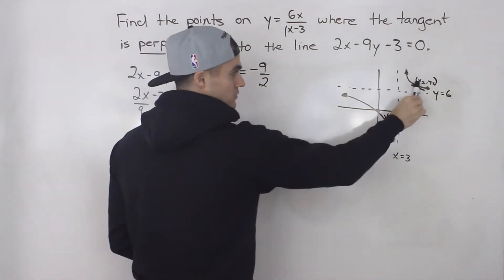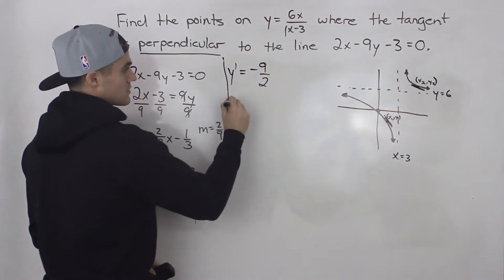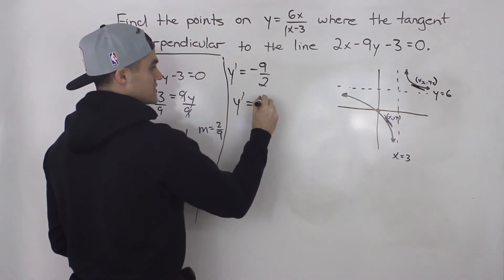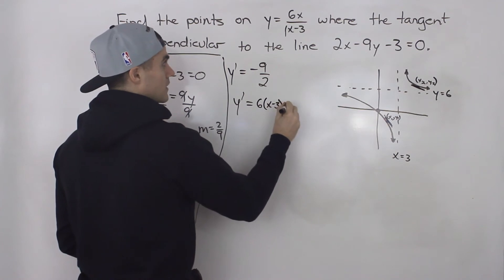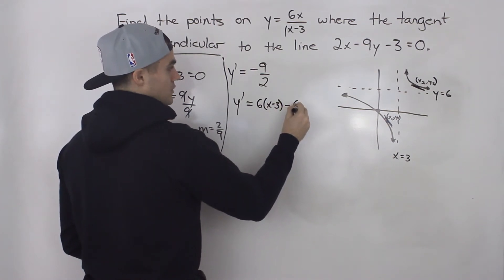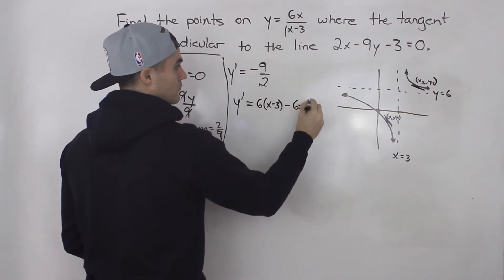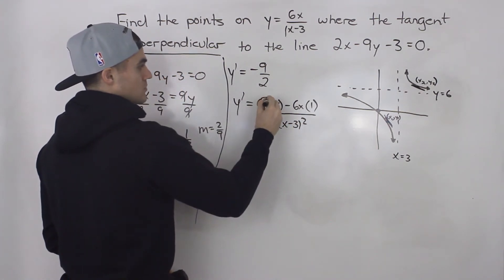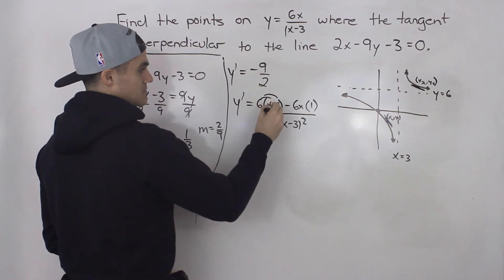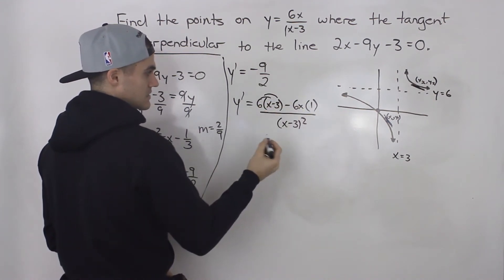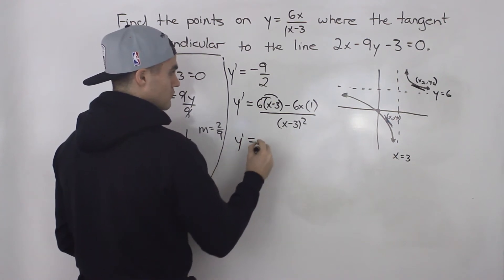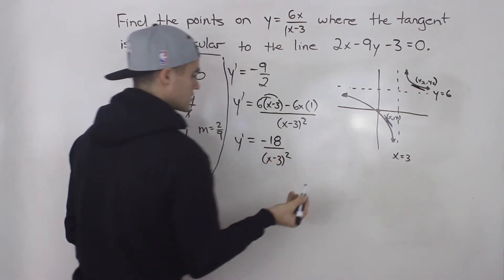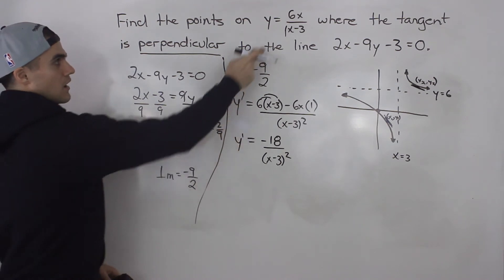To find the derivative, we apply the quotient rule. The derivative of the top is 6 times the bottom, minus the top times the derivative of the bottom, which is just 1, all over x minus 3 squared. Distributing the 6 gives 6x minus 18 minus 6x. The 6x terms cancel, so the derivative simplifies to negative 18 over x minus 3 squared.